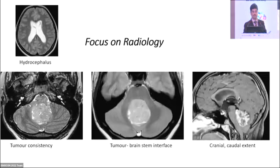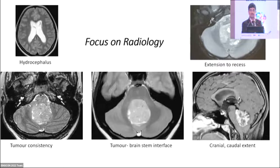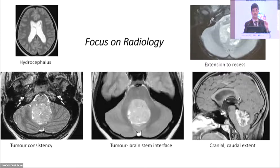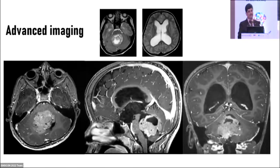Very important is tumor extension toward the foramen of Luschka and into the CP angle — one must not miss this. If removing the gross tumor, we may leave behind nodules inside the foramen of Luschka. We need to address these tumors specifically.